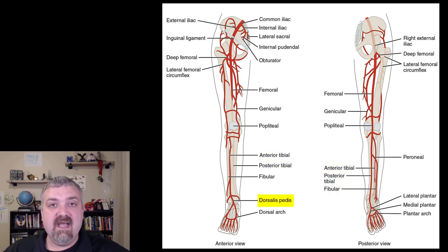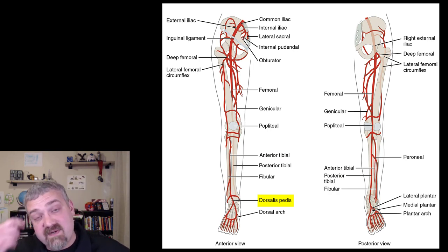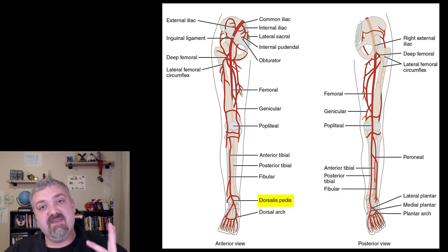Then lastly here we have the dorsalis pedis. Some call it the dorsalis pedis, both are fine. The reason that's important is that's a very important pulse point in your lower extremity. So we talked about the pulse points. We have the carotid artery here in your neck, the femoral artery is a good place to get a pulse, and there at the ankle you can use the dorsalis pedis.